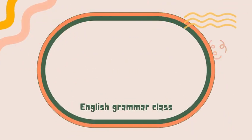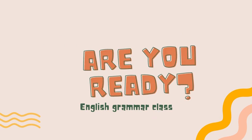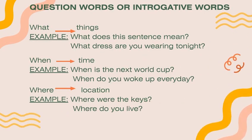Are you guys excited for English grammar class? Question words, also known as interrogative words. Number one: 'what' — you use 'what' when you ask about things. For example: 'What does this sentence mean?' or 'What dress are you wearing tonight?'